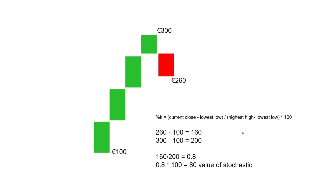The stochastic goes between 0 and 100. The calculation uses the last 14 candles by default — in this example we used five, but that doesn't really matter; it's about understanding the formula.